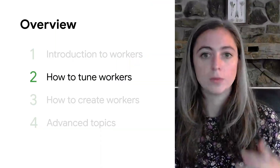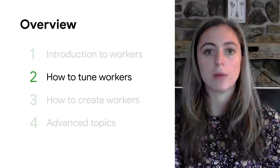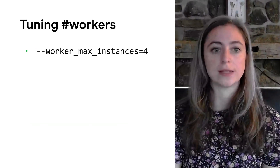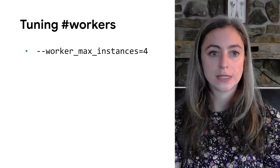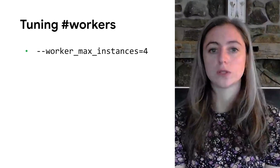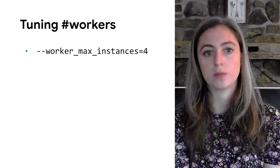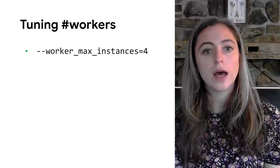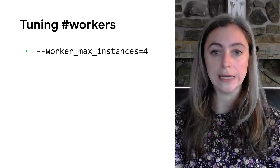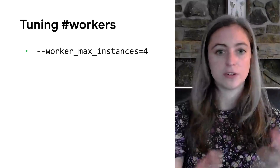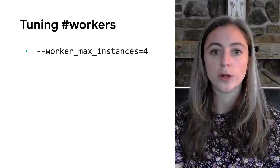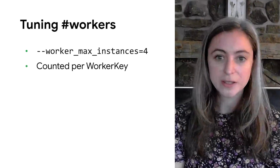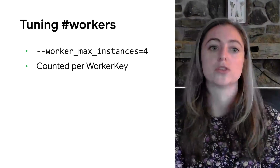There are a few flags that help you tune the behavior of workers to get better performance. The most important one is worker_max_instances, which sets the number of workers. It can take a raw number to set the default, and it can also take mnemonic equals value to set the number of workers for a particular action type. The default is four, but you almost certainly want something less than that. The reason is that we count the number of workers by worker key, and the worker key depends on a lot of different factors — the arguments, the environment, the executable — and the number of possible worker keys is potentially unbounded, so having a small multiplier can keep the resource usage under control.